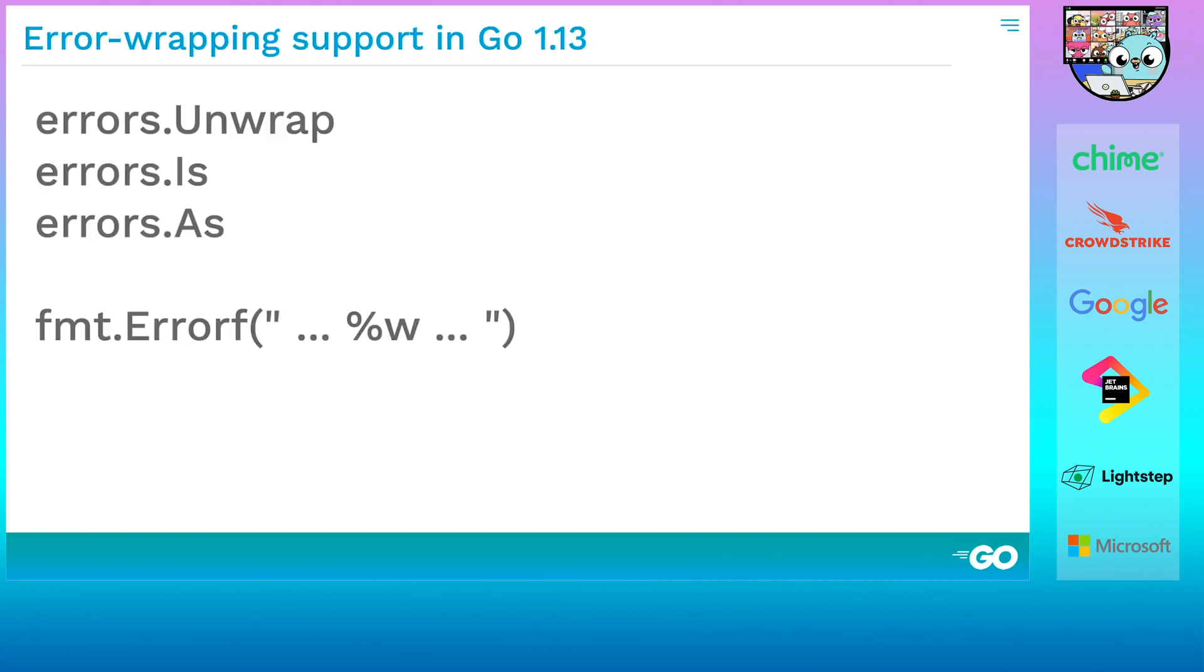Go 1.13 introduced support for error wrapping to the standard library. In keeping with Go's design philosophy, the support we added was pretty minimal. Three new functions in the errors package, and a new formatting verb for fmt.errorf. We weren't trying to break new ground. Many Go developers were already wrapping errors. We just felt it was time to codify this pattern in the standard library, so everyone's error wrapping code looked more or less the same.